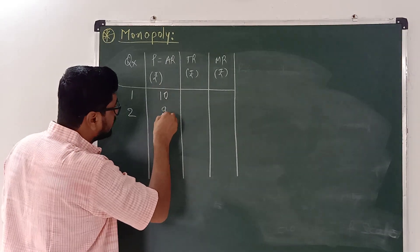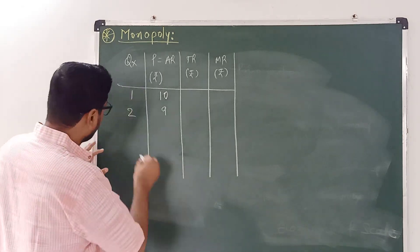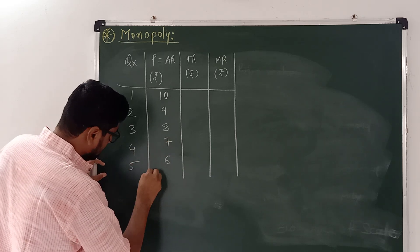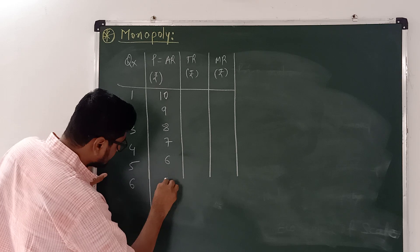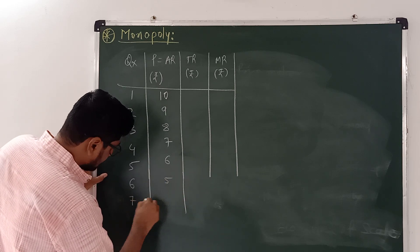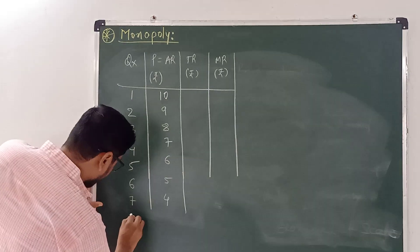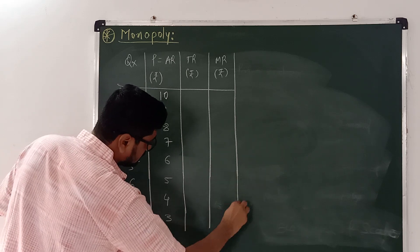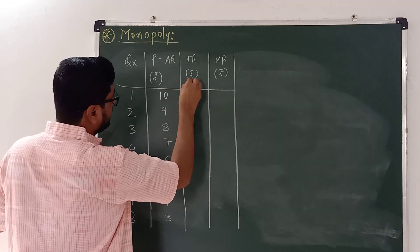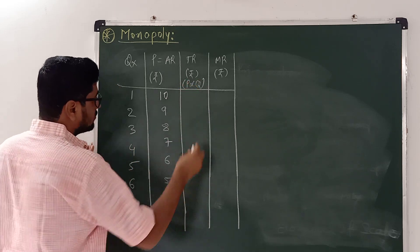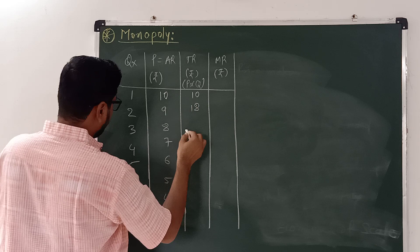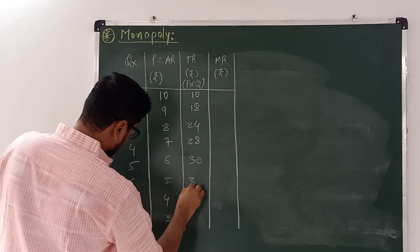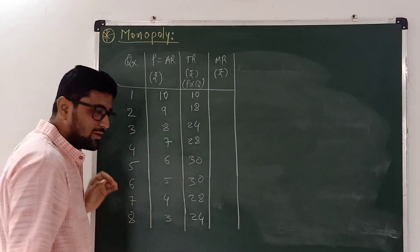Suppose price decreases as quantity increases: at quantity 1, price is 10; quantity 2, price 9; quantity 3, price 8; quantity 4, price 7; quantity 5, price 6; quantity 6, price 5; quantity 7, price 4; quantity 8, price 3. Total revenue is price into quantity: 10, 18, 24, 28, 30, 30, 28, 24.